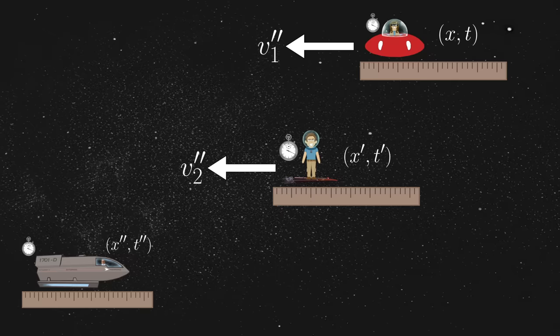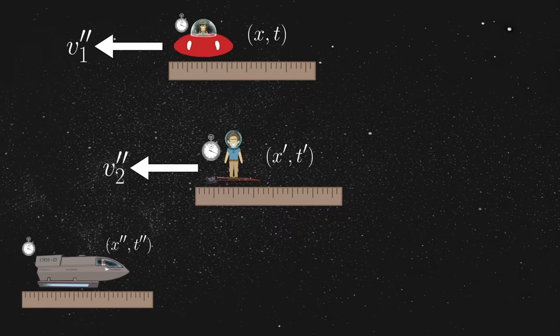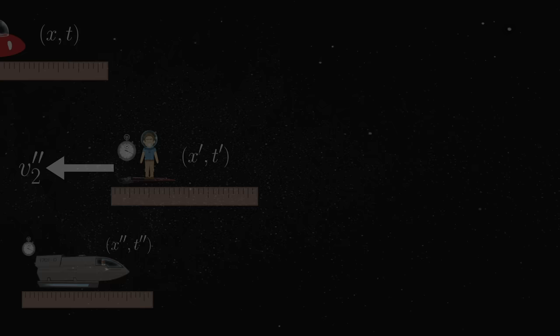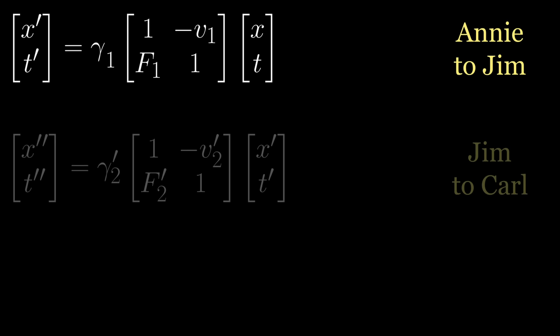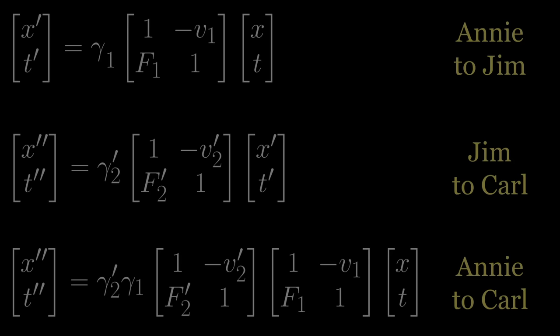Carl, therefore, sees Annie moving along with some velocity v1 double prime, and he sees Jim moving along with some other velocity, which we'll call v2 double prime. Now let us impose the condition of a mathematical group. A transformation from Annie to Jim, followed by yet another transformation from Jim to Carl, should naturally be the same as a direct transformation from Annie to Carl. We now multiply the two matrices together, yielding a new transformation, which looks like this.